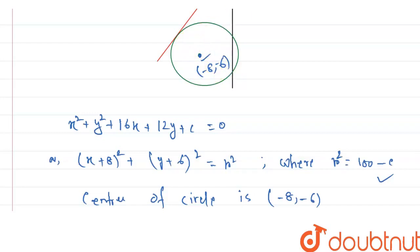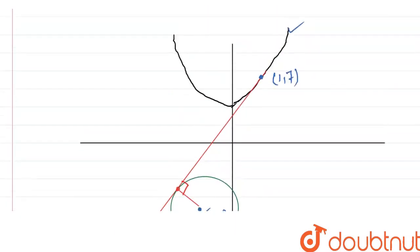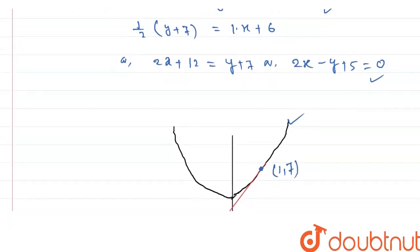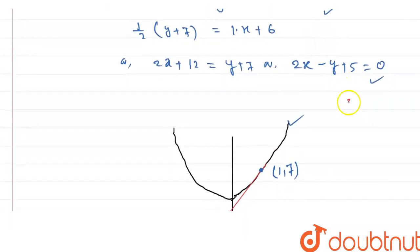And if we draw a line from that center point, the tangent at that point and a radius through that point are perpendicular to each other. If we see the equation, the slope of the tangent is 2.